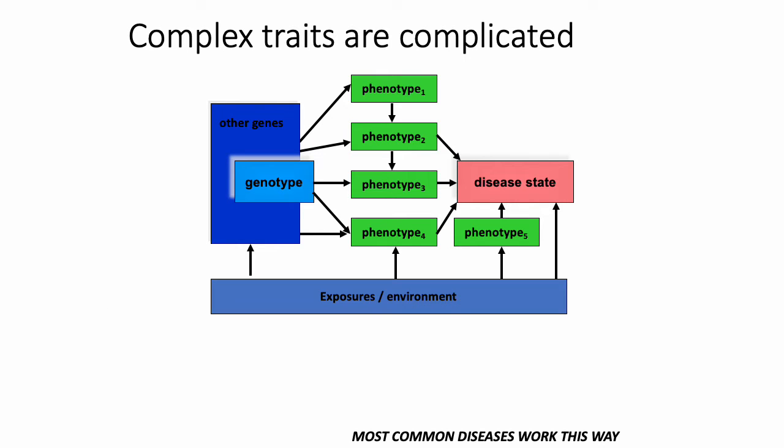Unfortunately, most common diseases — like cancer, diabetes, schizophrenia — are complex traits. Complex traits are typically driven by variation in a large number of genes. For example, a complex trait like height has thousands and thousands of genetic variants all across the genome implicated in its variation. This is obviously very different from Mendelian disorders, where generally one gene is primarily responsible.